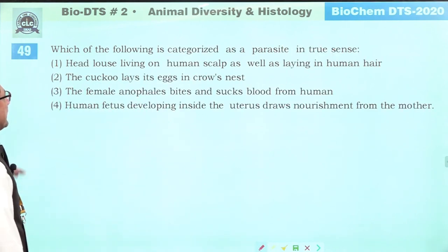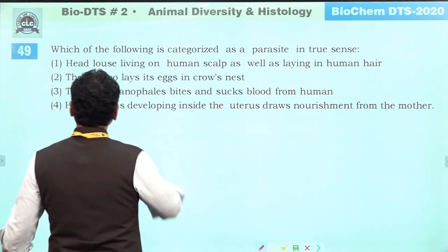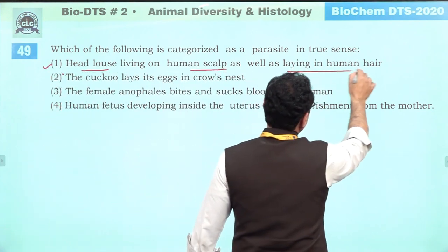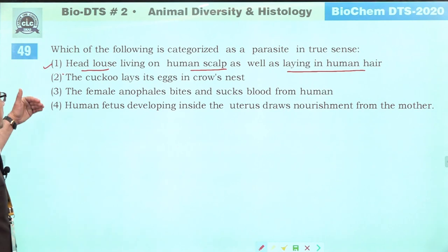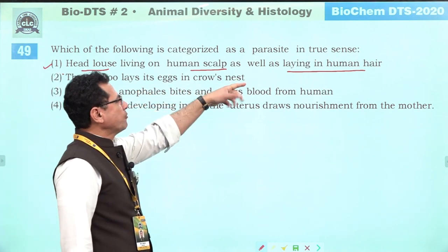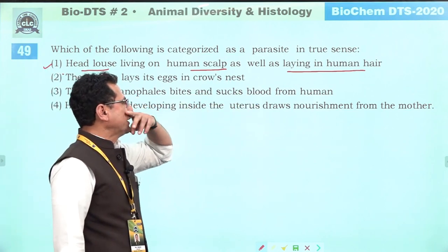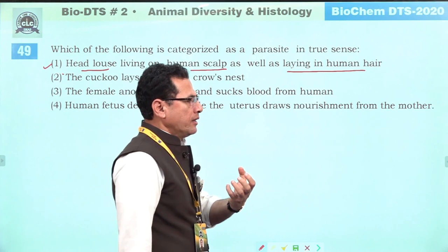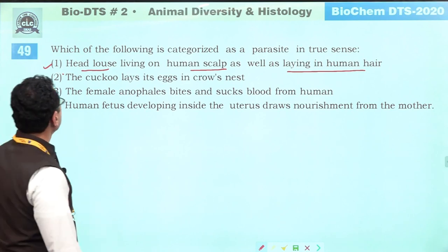Which is categorized as true parasitism? True parasitism requires a long-term association between host and parasite. Head louse living on the human scalp and laying eggs — this is a permanent association and fits the definition. Cuckoo laying eggs in crow's nest is brood parasitism. Female Anopheles biting humans is not true parasitism. Correct answer is one.